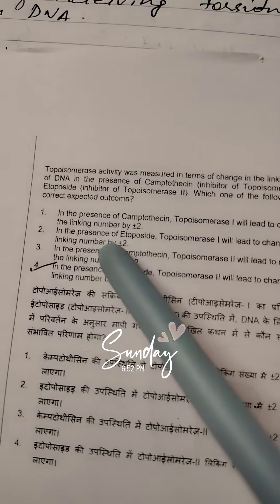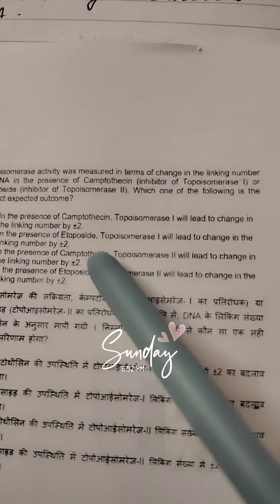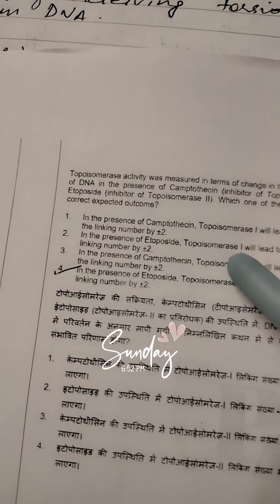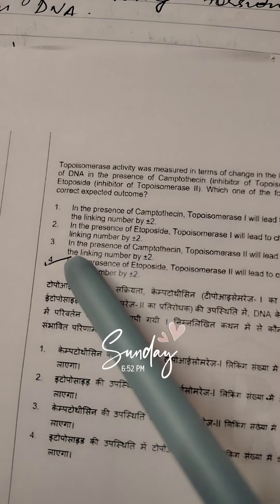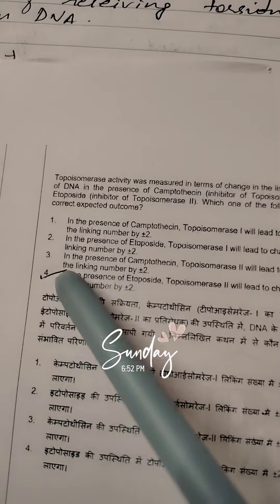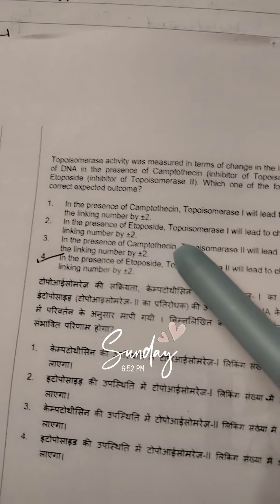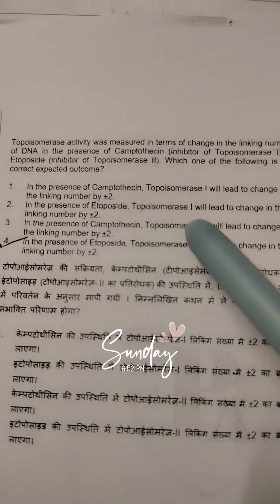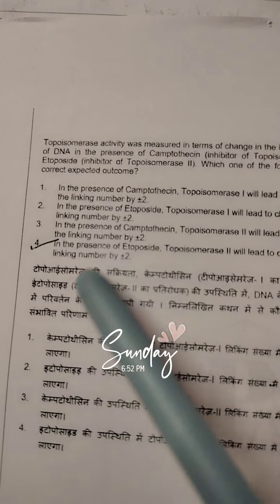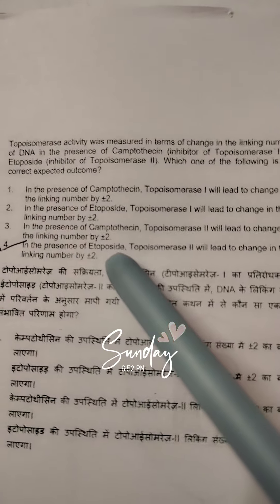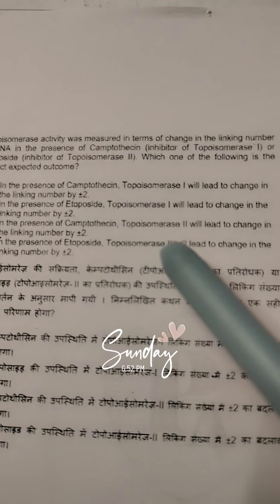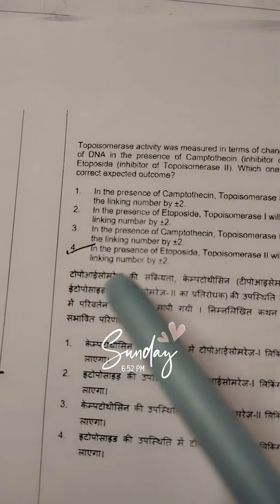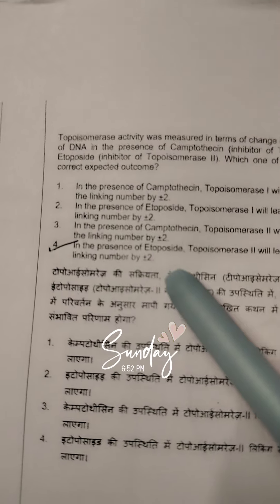In the presence of etoposide, it inhibits topoisomerase 2, not topoisomerase 1. So that option is also incorrect. In option 3, camptothecin inhibits topoisomerase 1 activity, not topoisomerase 2, so that option is also not correct. Therefore, etoposide will inhibit topoisomerase 2 activity — this is the correct option — and it will lead to a change in the linking number by plus or minus 2.